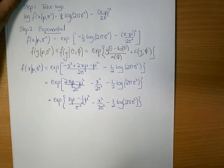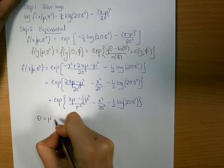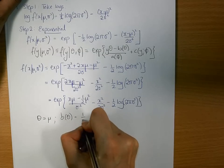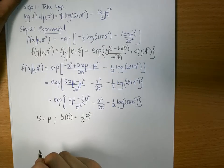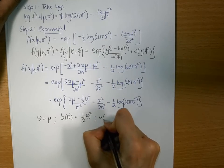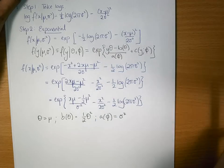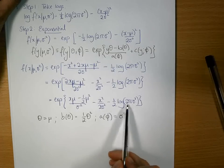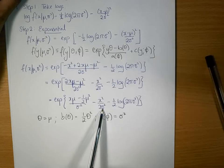Now what I have is theta is equivalent to mu over sigma squared. Hence b of theta is a half of theta squared, and a of phi equals sigma squared.